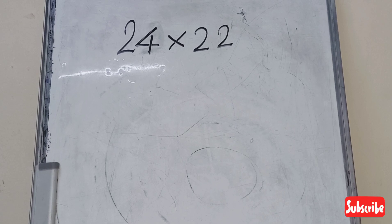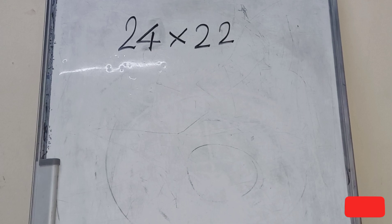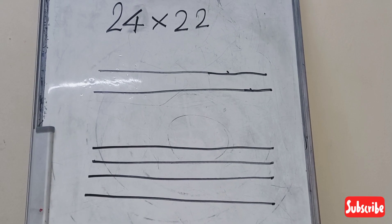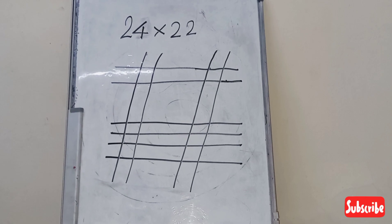Let's check with 24 and 22. Draw two lines first. Then draw four lines below. Then draw two lines slanting like this. Now circle and count the points.